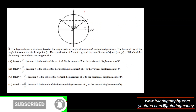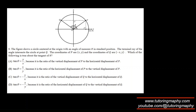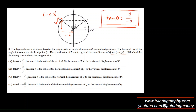Here we need to find tan of theta. Tan of theta is opposite over adjacent. For Q, the coordinates are negative x, comma y. So the height is y and this length is negative x. For tan theta, opposite is y and adjacent is negative x — so the answer is y over negative x, which is option C.